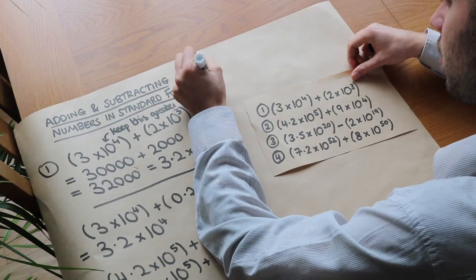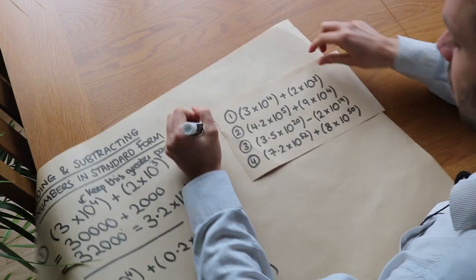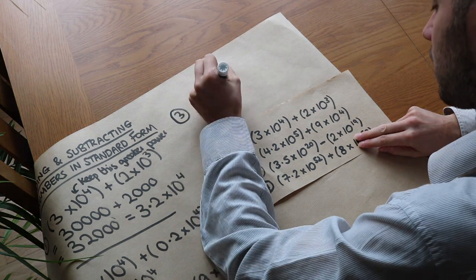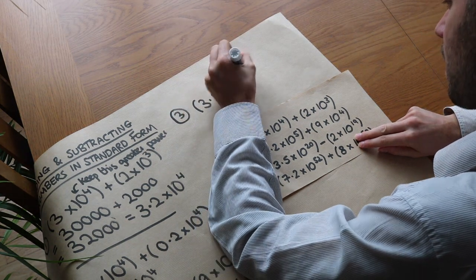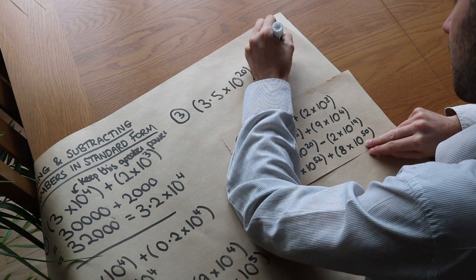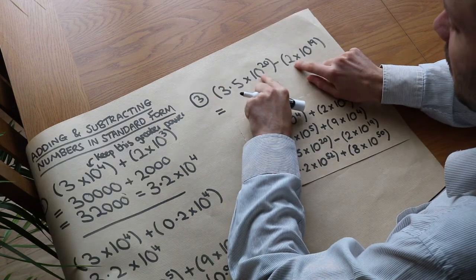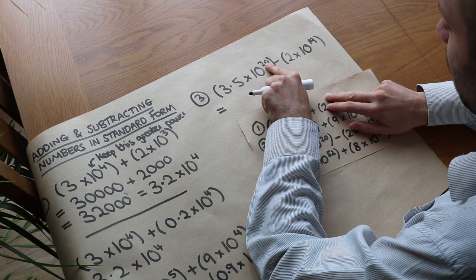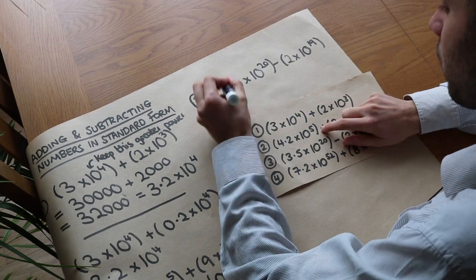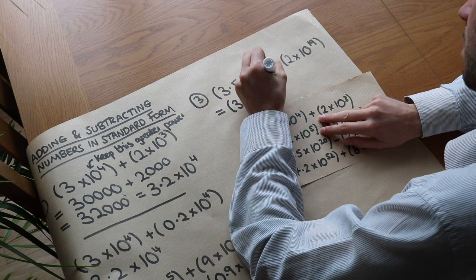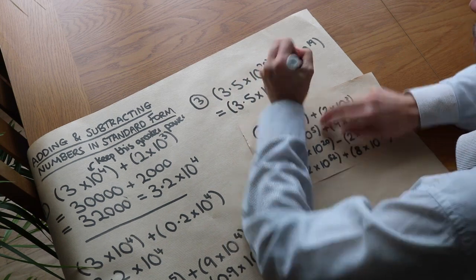Let's do the third one. We've got a subtraction here, which works in exactly the same way. So we've got 3.5 times 10 to the 20 minus 2 times 10 to the 19. And if you were trying to write these out explicitly, you'd have to write out a lot of digits. So this is the higher power. It has a higher power than that one, so we're going to keep that as it is. And this is the one we're going to change.